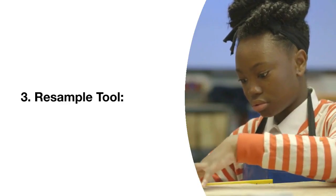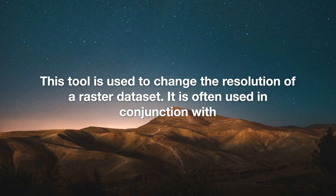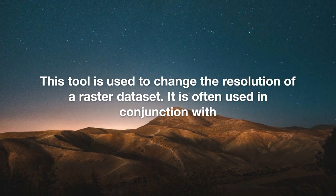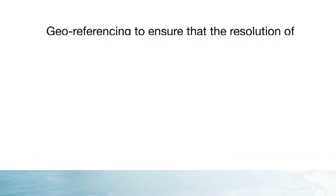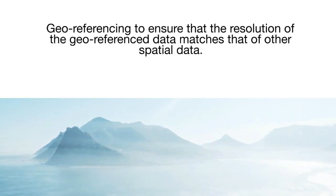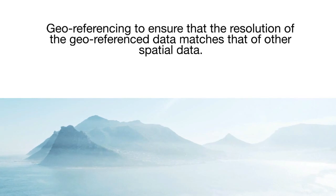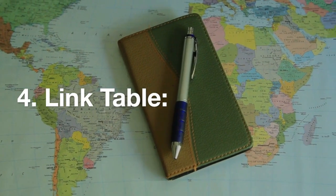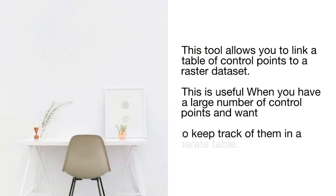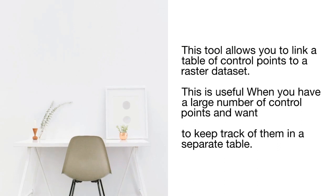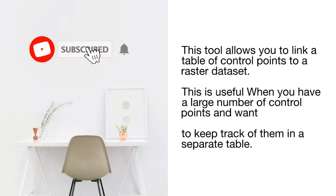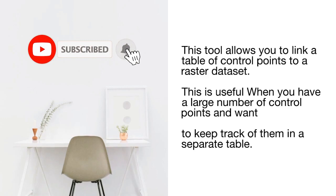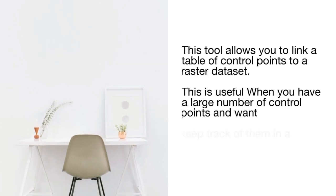3. Resample Tool — this tool is used to change the resolution of a raster dataset. It is often used in conjunction with georeferencing to ensure that the resolution of the georeferenced data matches that of other spatial data. 4. Link Table — this tool allows you to link a table of control points to a raster dataset. This is useful when you have a large number of control points and want to keep track of them in a separate table.